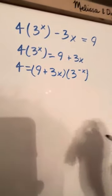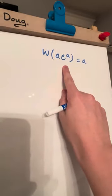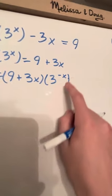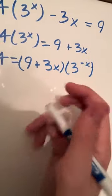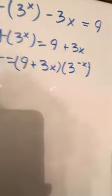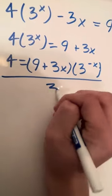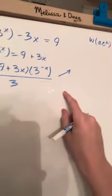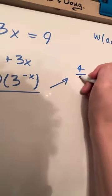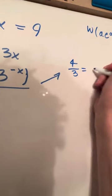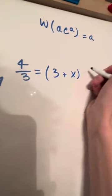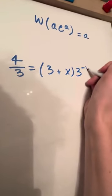So now what do we do from here? We want it to look like the Lambert W form. All we really need to do here is divide this entire expression by 3. So we're going to have 4 over 3 is equal to — 9 divided by 3 is 3 plus x — and then we have 3 to the power of negative x.